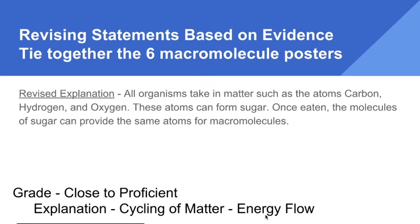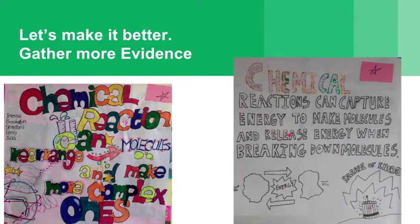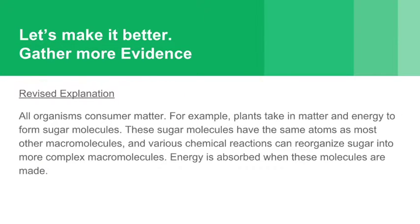But this answer starts to leave out a bit of the discussion of energy, so let's try to make it even better. Let's look at two more evidence statements. This poster reads: chemical reactions can rearrange molecules and make them more complex. Another statement: chemical reactions can capture energy to make molecules and release energy when breaking down molecules. Considering that information, we might construct an even better explanation: 'All organisms consume matter. For example, plants take in matter and energy to form sugar molecules. These sugar molecules have the same atoms as most other macromolecules, and various chemical reactions can reorganize sugar into more complex macromolecules.'